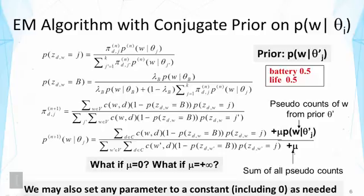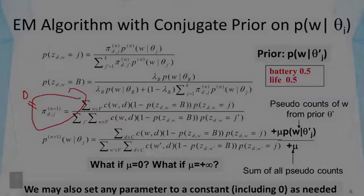This is one way to impose a prior. We can also impose other constraints — for example, we can set any parameter to a constant, including zero as needed. For example, we may want to set one of the pi values to zero, which means we don't allow that topic to participate in generating that document. This is only reasonable when we have prior knowledge that strongly suggests this.